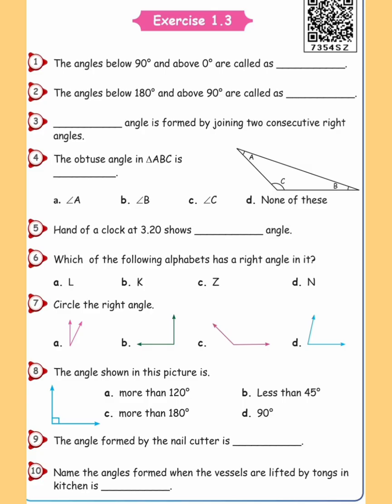Now come to exercise 1.3. First question: angles below 90 degrees and above 0 degrees are called as — blank. The answer is acute angle.